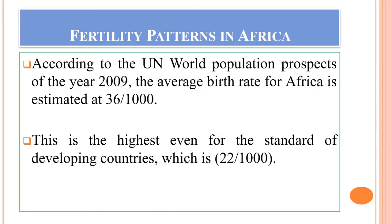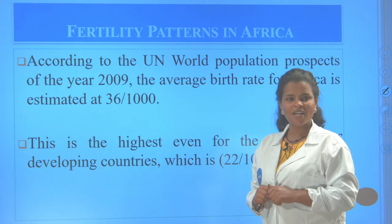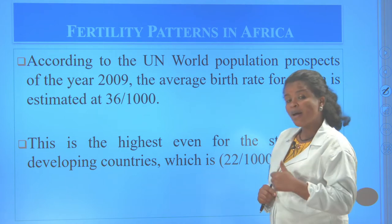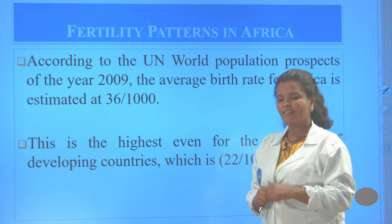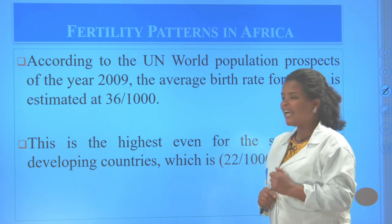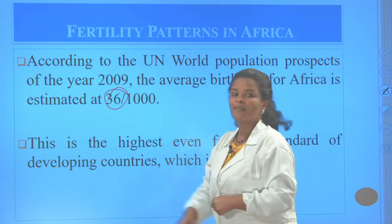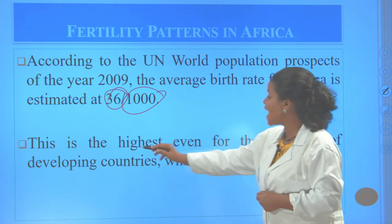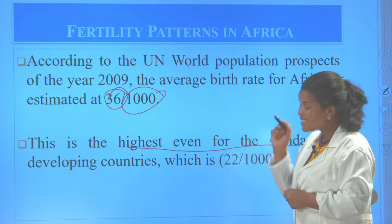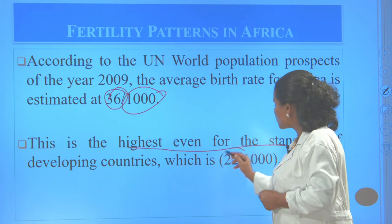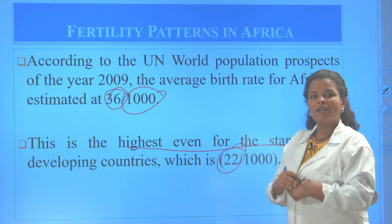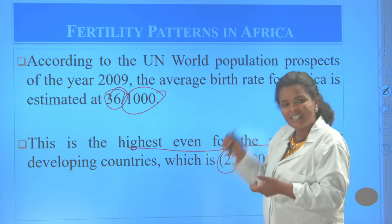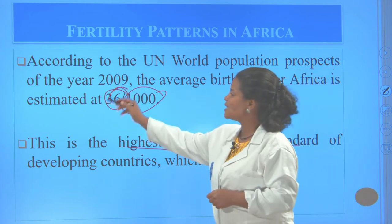Let us see what the fertility of Africa looks like according to the 2009 data sheet of the United Nations. As seen in the table, the birth rate of Africa is very high — it is 36 people born per thousand. This is the highest even by the standard of developing countries, which is 22 per thousand. The fertility rate of Africa, at 36 per thousand, is greater than the standard of developing countries.